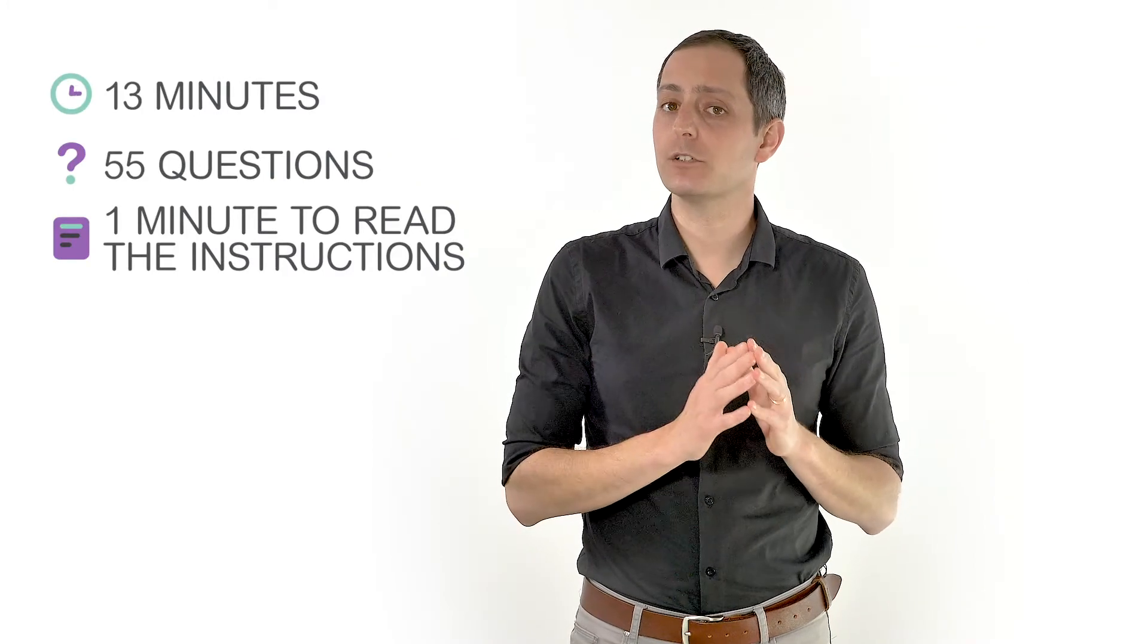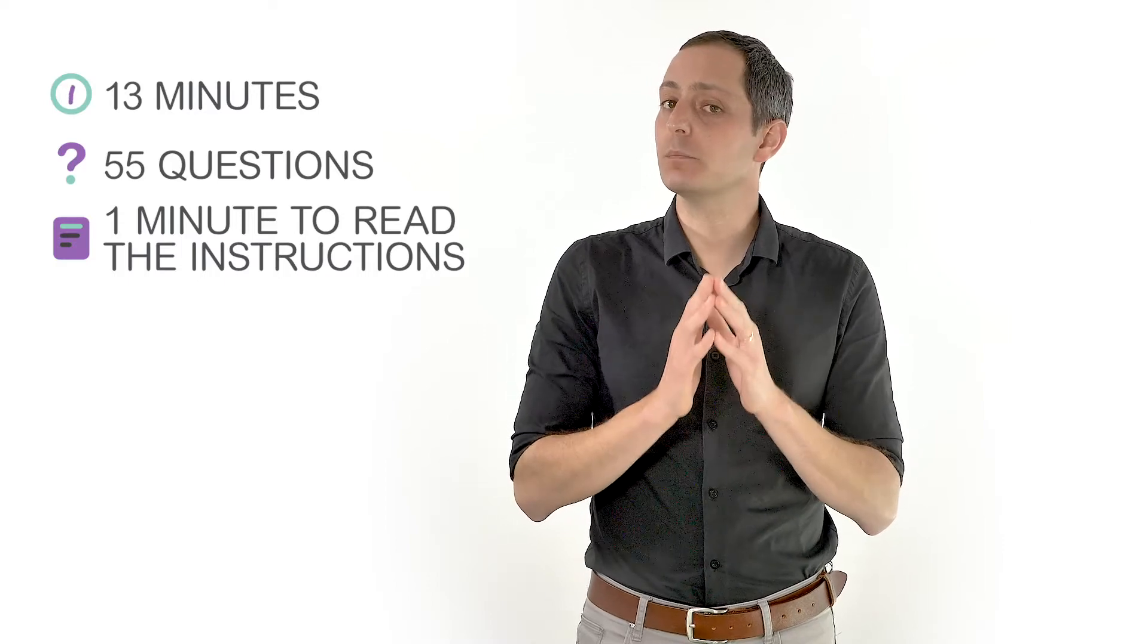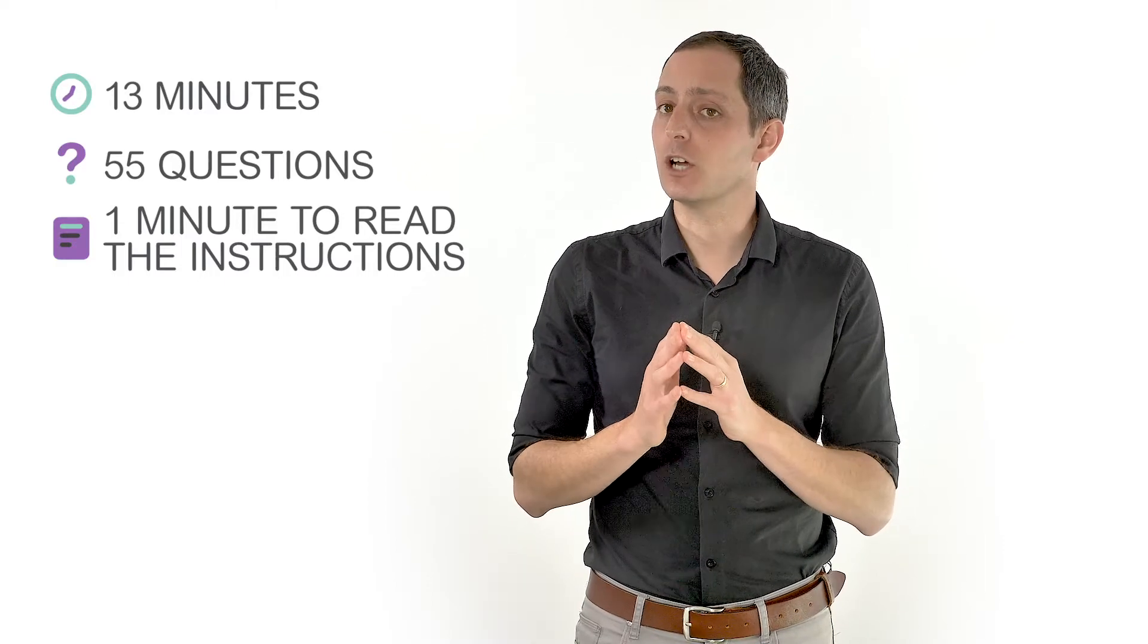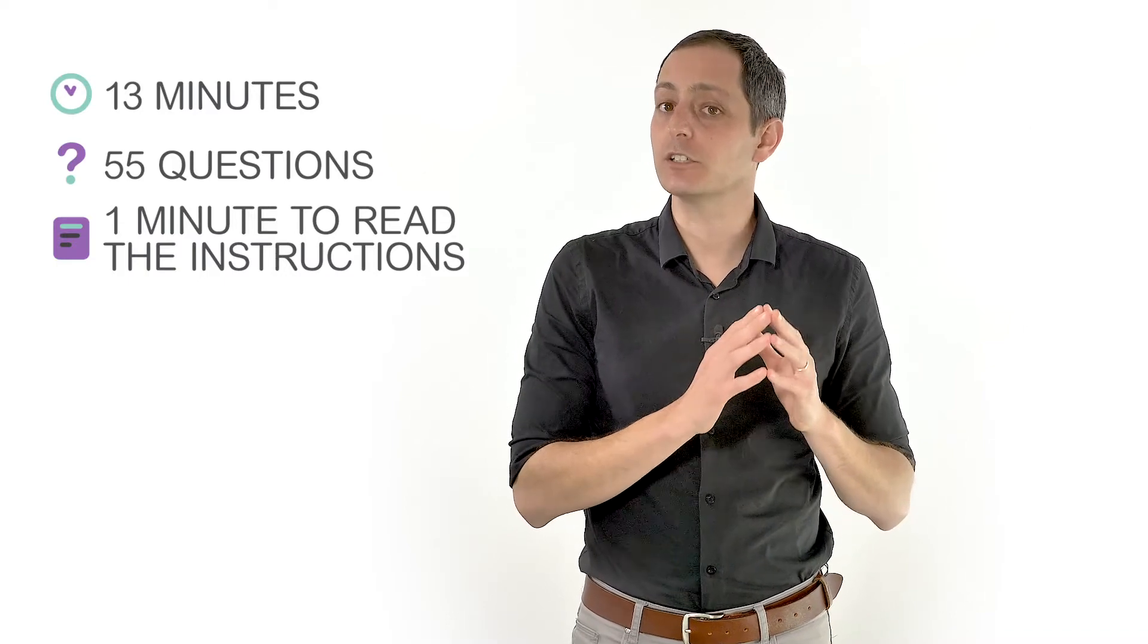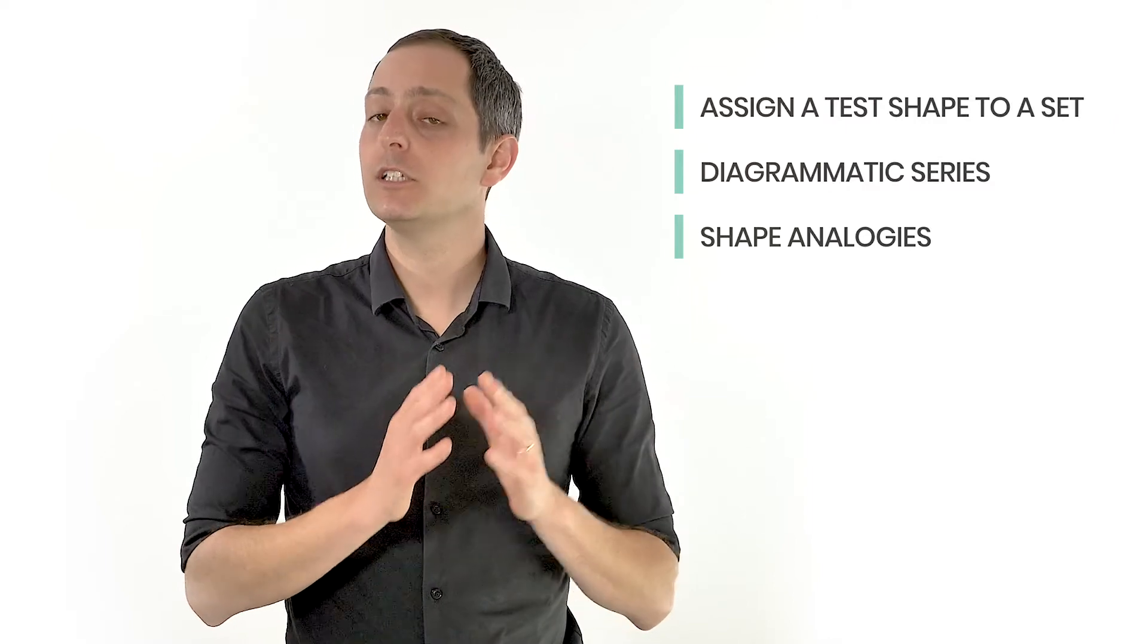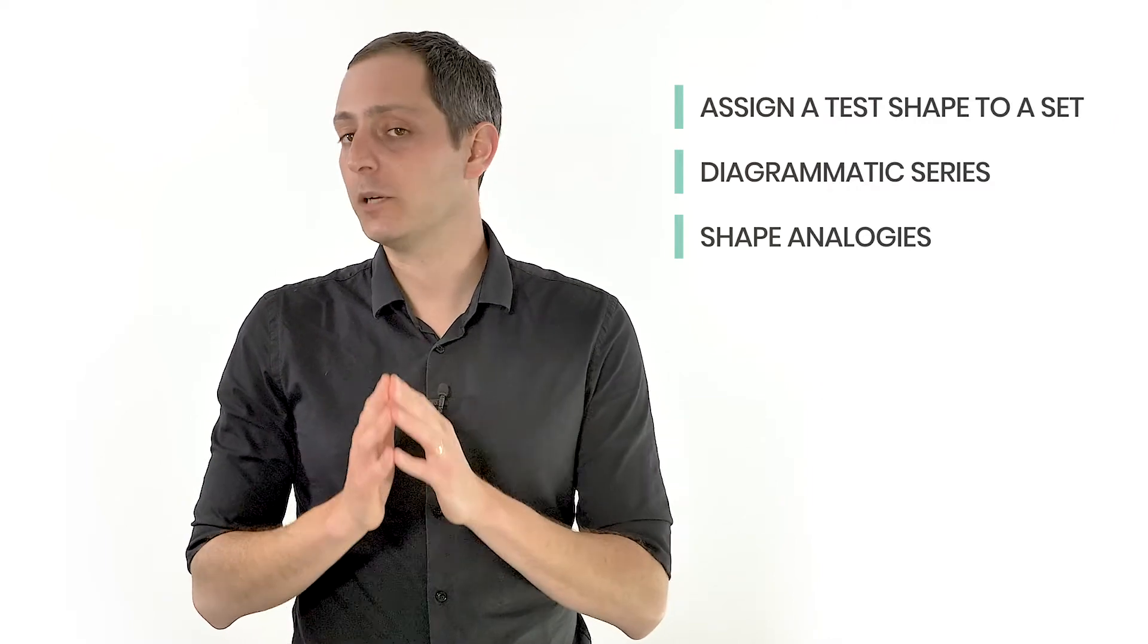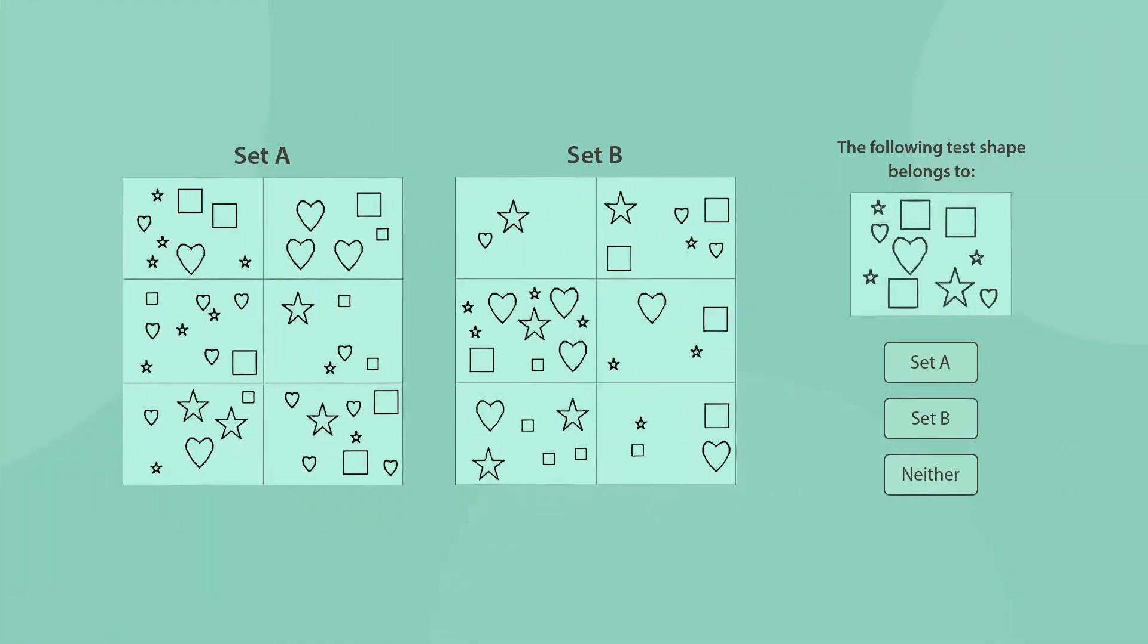The abstract reasoning section is comprised of 55 items to be answered in 13 minutes. This section is designed to examine a candidate's ability to identify a certain logic or a set of criteria based on minute details under severe time constraints. UCAT abstract reasoning questions can be divided into three question types: assign a test shape to a set, diagrammatic series, or shape analogies. Let's try a simple question.